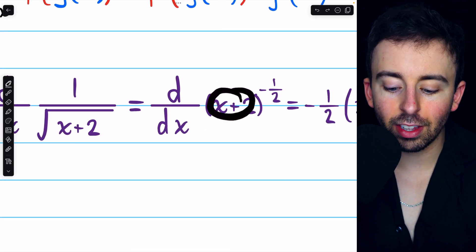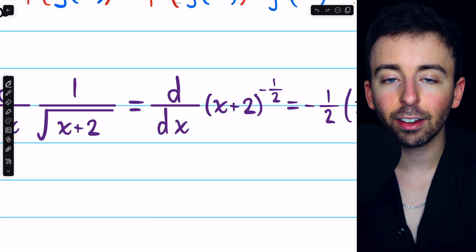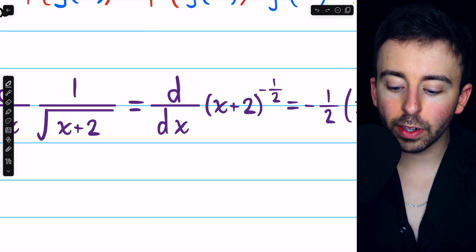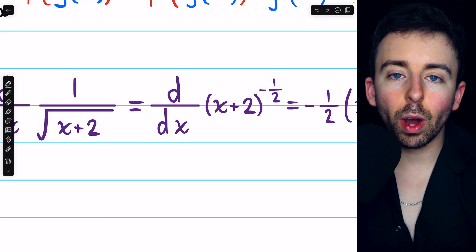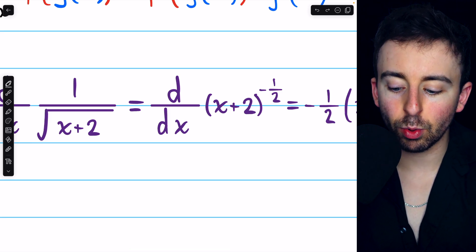Times, don't change the inside function, we're going to leave that as x plus 2. And then we have to reduce that exponent by 1. Negative one half minus 1 is negative three halves.